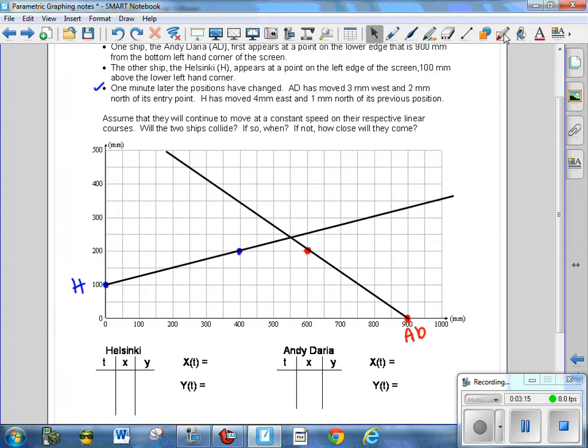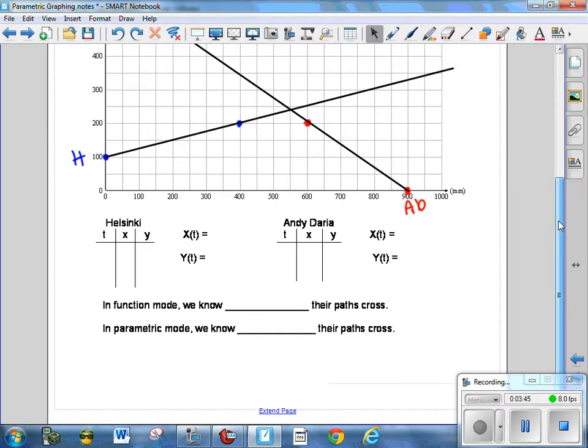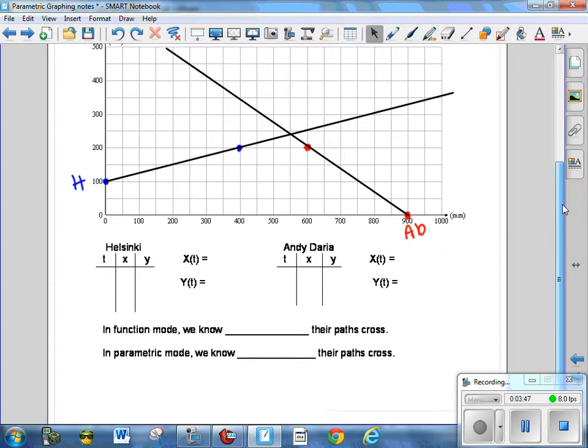Does that mean that they collide? Now, some of you are probably going, Well no, because they might cross but we don't know when they cross. And that's exactly the question. Their paths cross, but are they both at that intersection point at the same time? That's the question. And that is what a parametric equation can answer that a linear, just a regular equation in rectangular or XY form cannot answer. Because we need to associate time with X and Y.